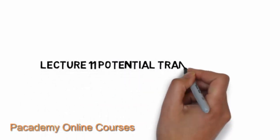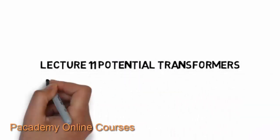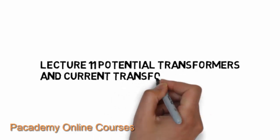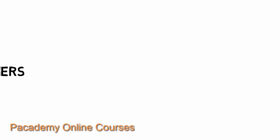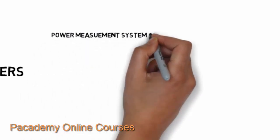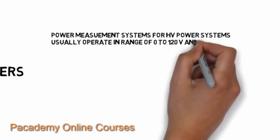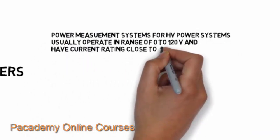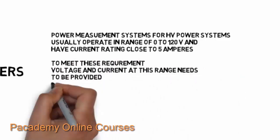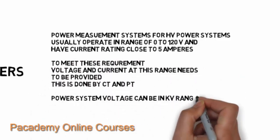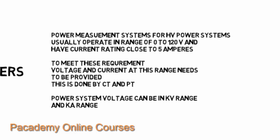This is the lecture on potential transformer and current transformer. It is seen that the power measurement systems for high voltage systems usually operate in the range of 0 to 120 volts and have a current rating close to 5 amperes. To meet these requirements, voltage and current at this range needs to be provided.